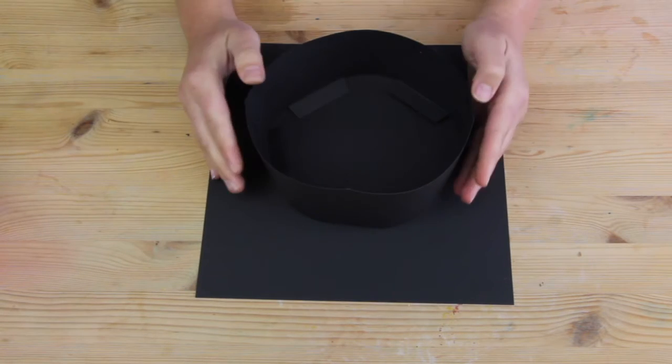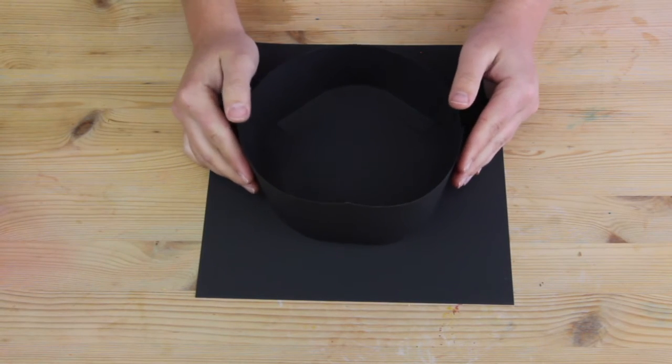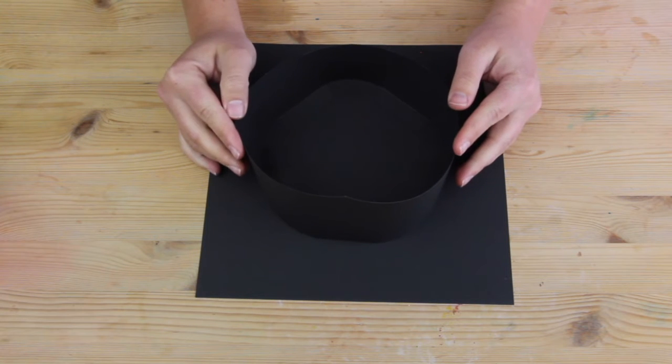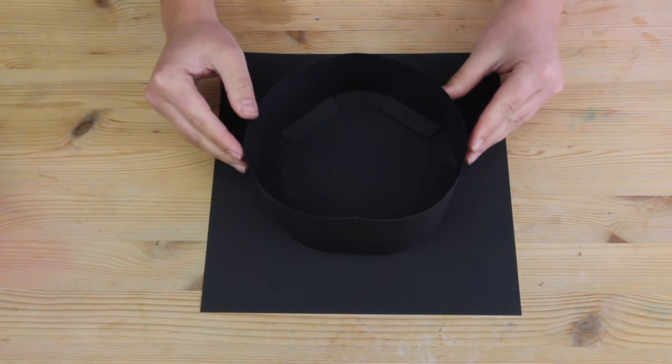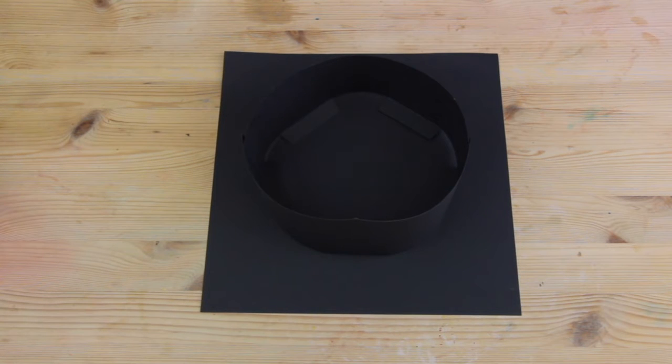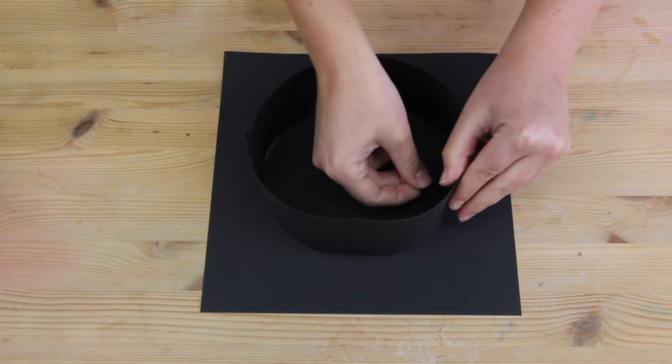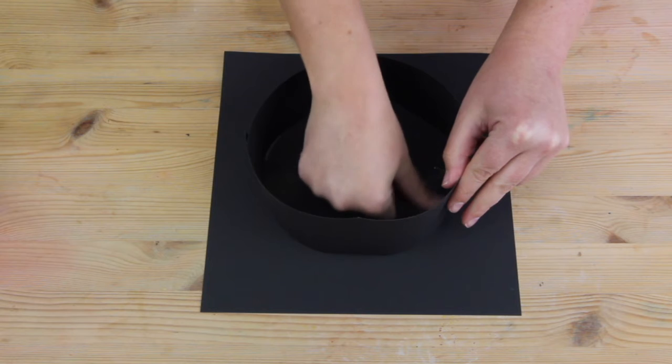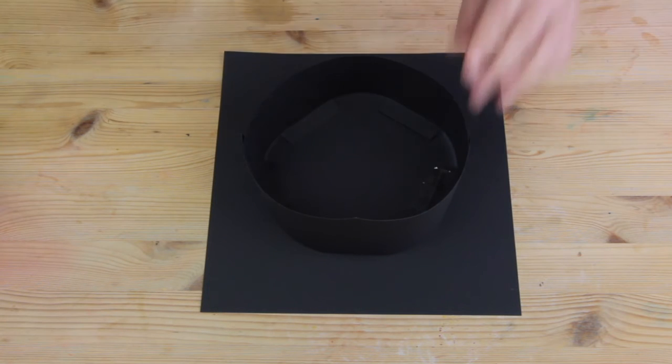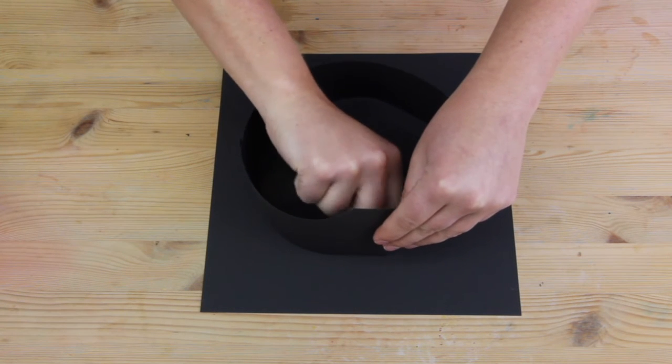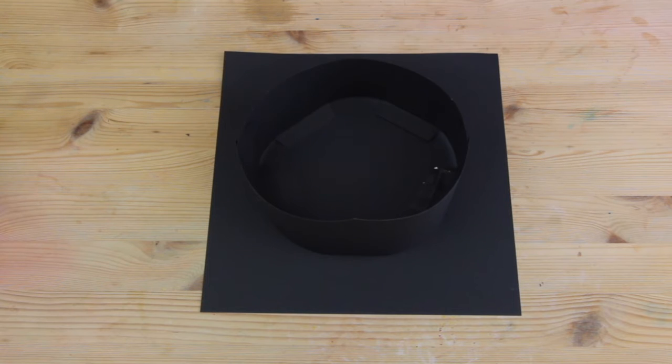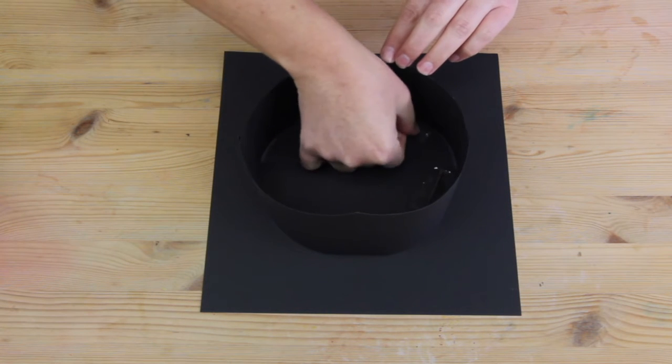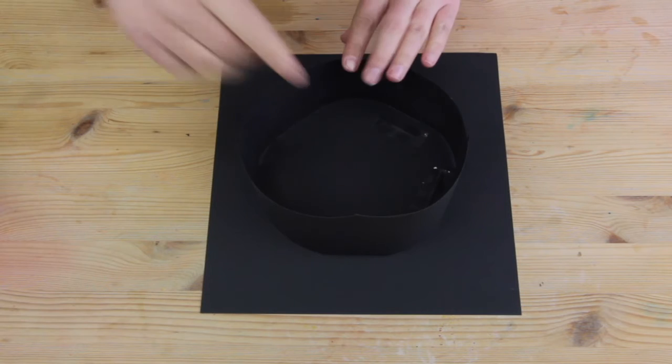to attach the hat to the base. Align that in the center of your square. All we need is some tape, or you could use glue, and just go around and stick those tabs down onto the top of the hat.